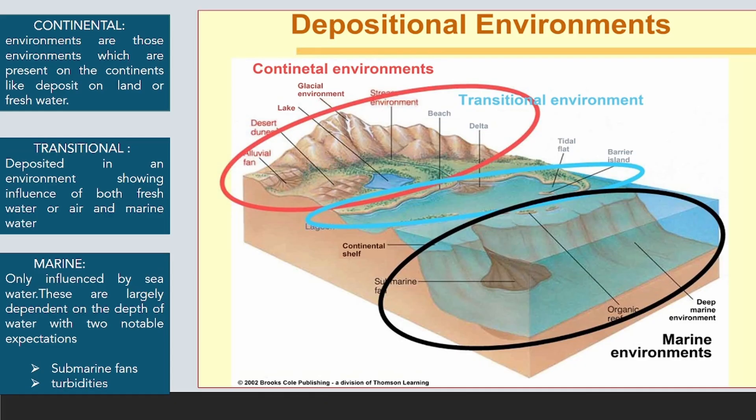In this picture, three depositional environments are marked rounded by three colors. Continental environments are those present on the continents like deposits on land or freshwater. Transitional environments show the influence of both freshwater or air and marine water. Marine environment is only influenced by seawater, largely dependent on water depth, with two notable exceptions: submarine fans and turbidites.